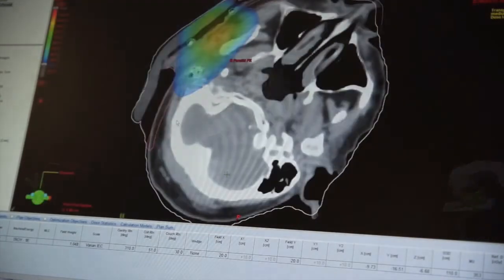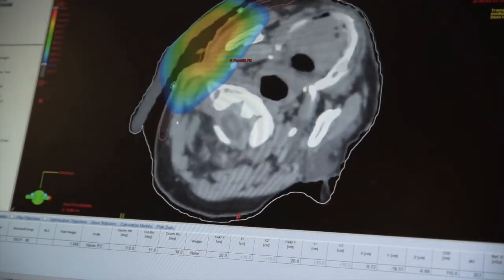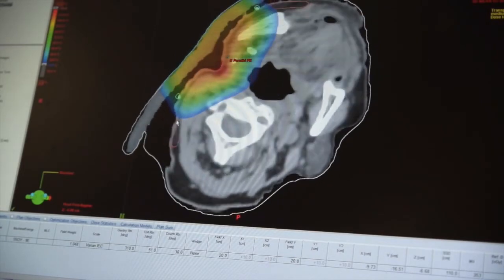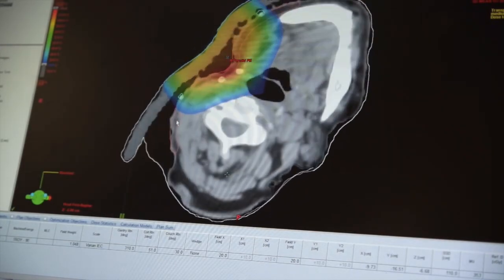This 3D modelling software is displaying dose on a patient's CT scan. It shows how electrons give a high dose to the skin, but don't penetrate far into underlying tissues.